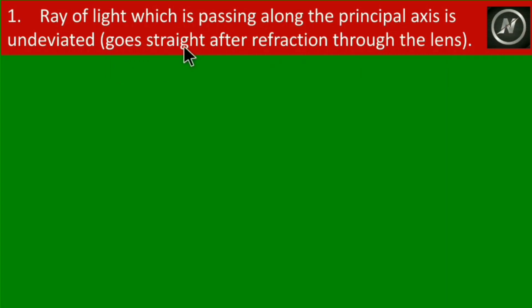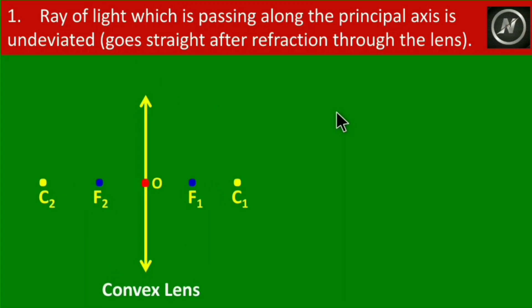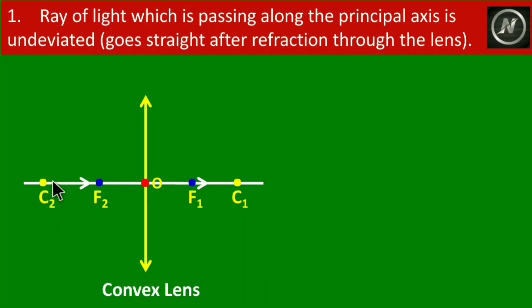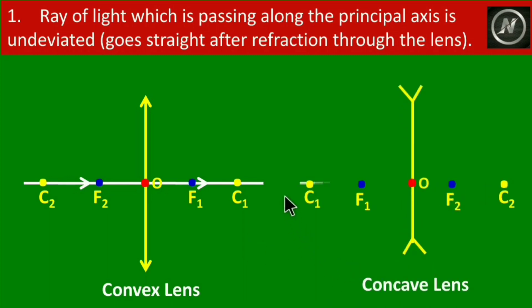Rule one: A ray of light which is passing along the principal axis is undeviated — it goes straight after refraction through the lens, without any deviation. This rule is applicable for both convex and concave lenses.